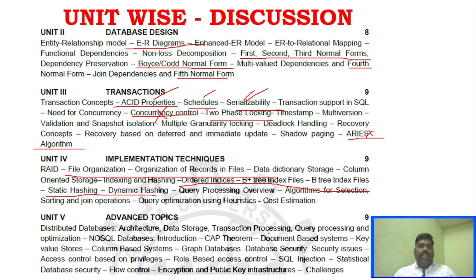Unit 5 is very vast with many different concepts. The key areas in Unit 5 are: distributed database architecture, transaction processing, query processing, NoSQL database, and SQL injection.